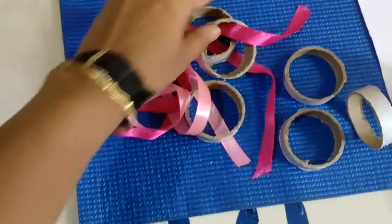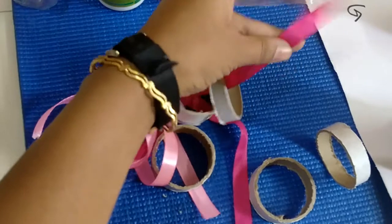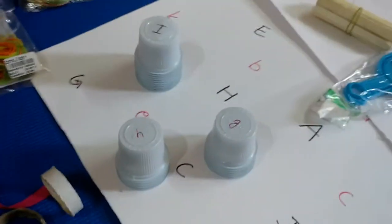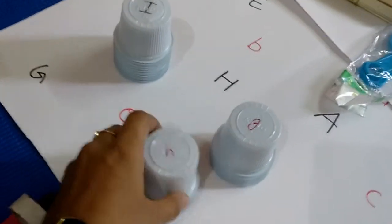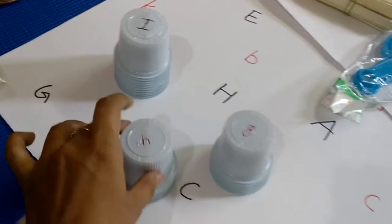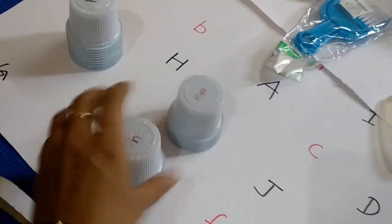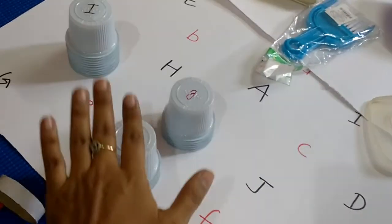These ribbons are to be threaded like this. These are disposable glasses—I have written alphabets using permanent markers on chart paper. The activity is to match the alphabets according to the letters written over here.